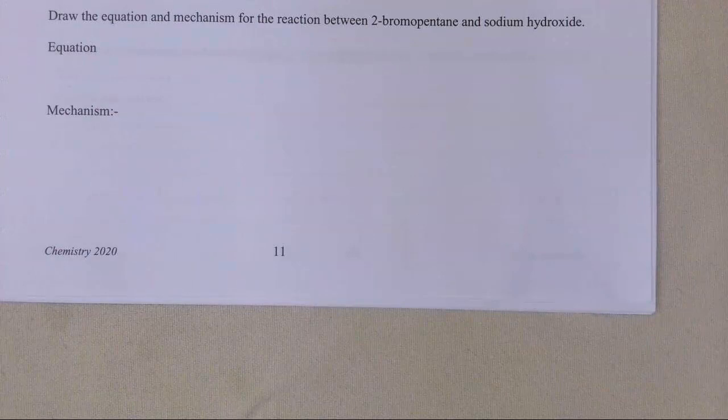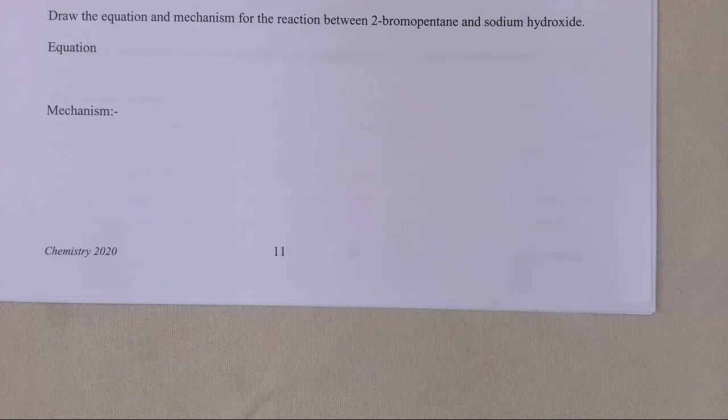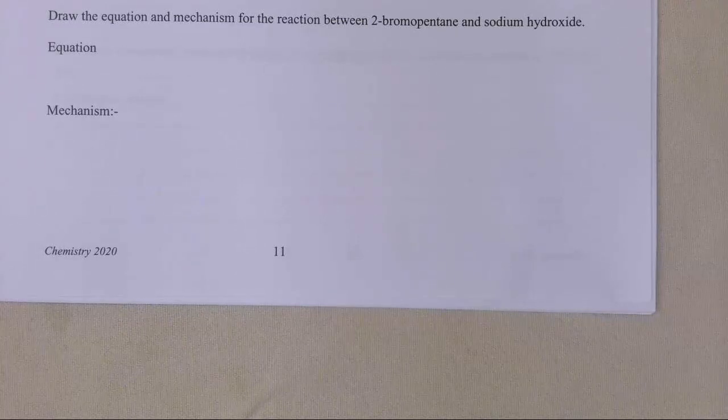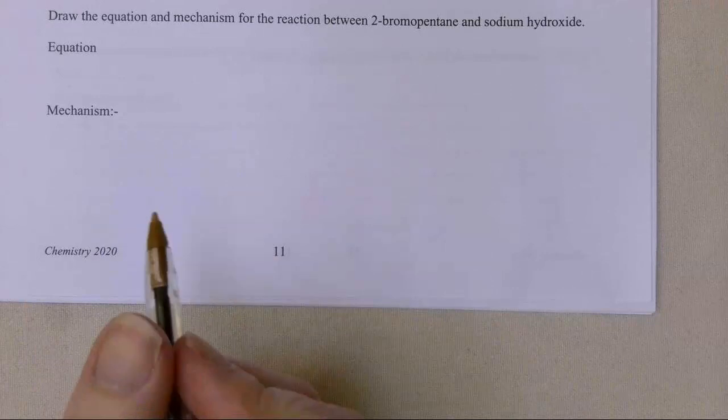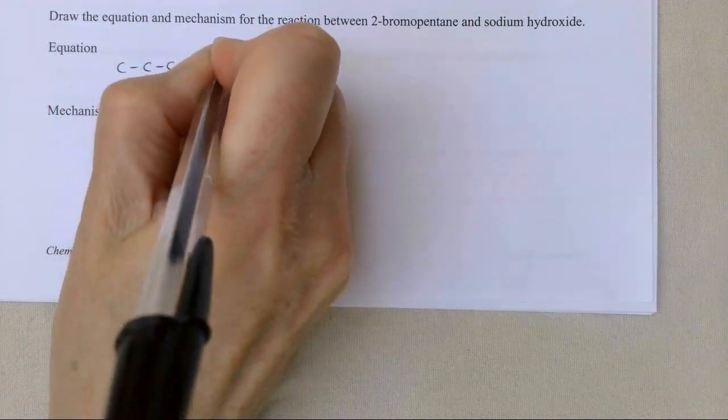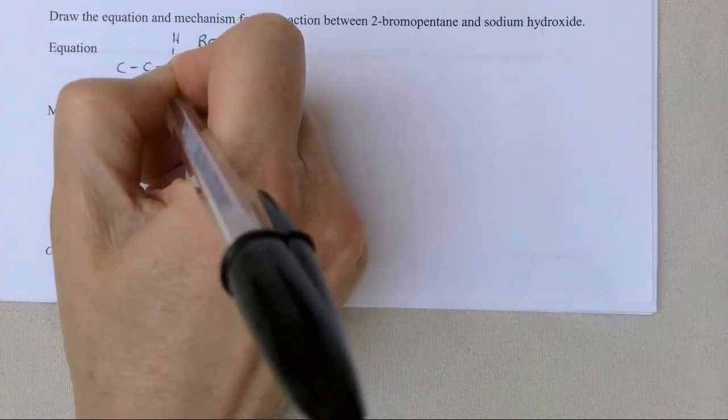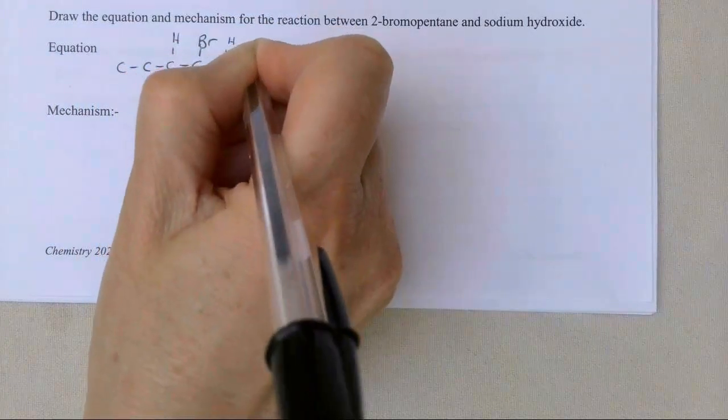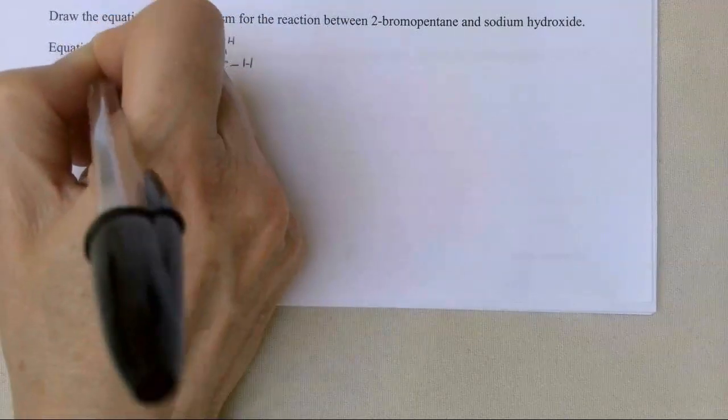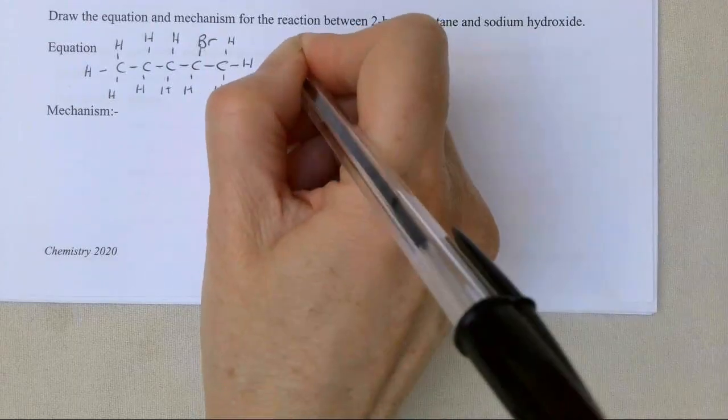The second mechanism we're going to look at is the SN2 mechanism. This generally works best with primary halogenoalkanes and we're going to react 2-bromopentane with sodium hydroxide again. It can work for secondaries as well, so it works for secondaries or primaries. I'm going to draw out 2-bromopentane, and I've got my Br group here, and the rest of my hydrogens can just go on as normal. So this is obviously a secondary. Sometimes secondaries react via SN1, some via SN2, but I'm going to call this one reacting by SN2 mechanism.